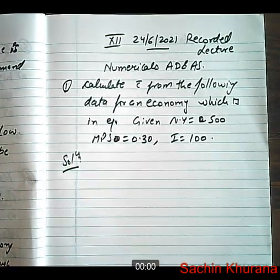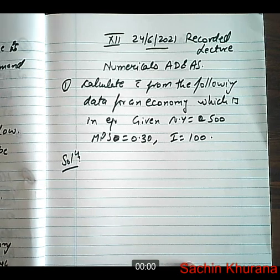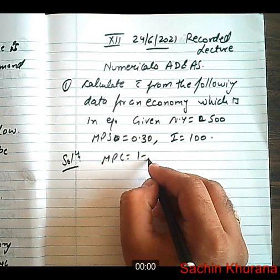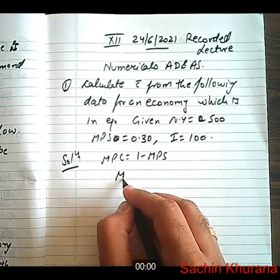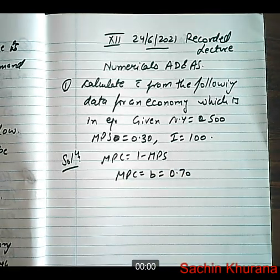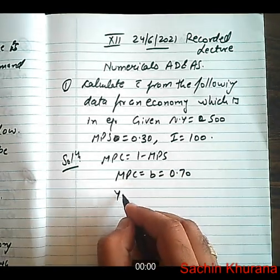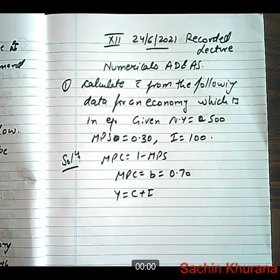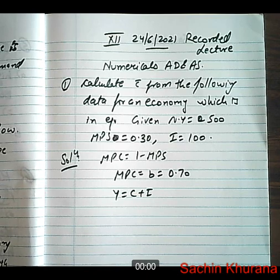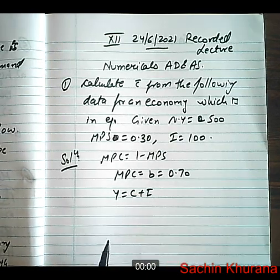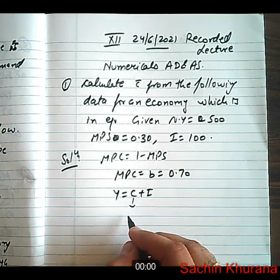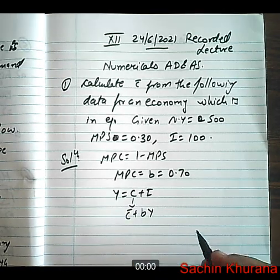So let us solve it. We know MPC is equal to 1 minus MPS, so MPC is equal to B is equal to 0.70. We know that Y is equal to C plus I. We will try to substitute the values, because we know that C is equal to C bar plus BY.